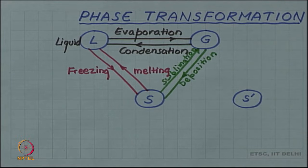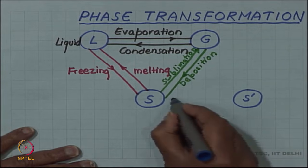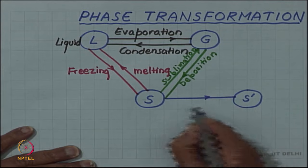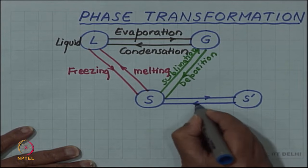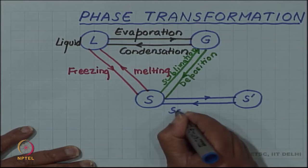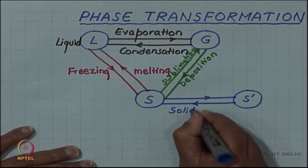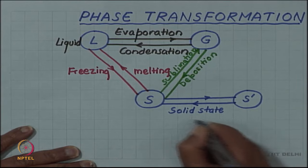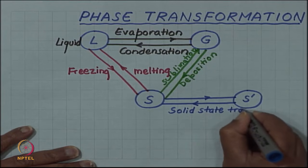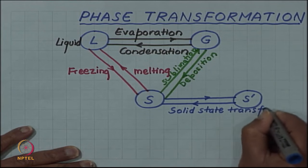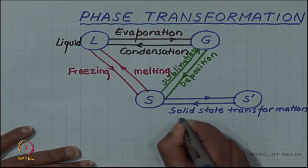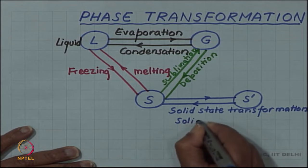A very important class of transformation is one in which one solid phase transforms into another solid phase. We can have a solid-solid transformation, also known as a solid state transformation.